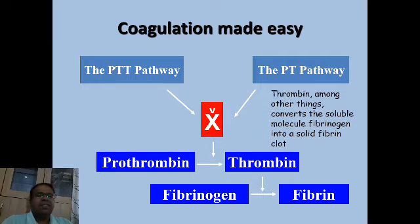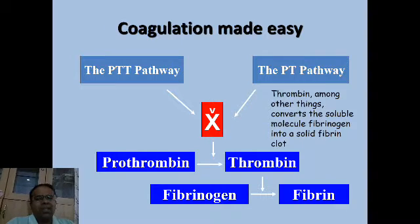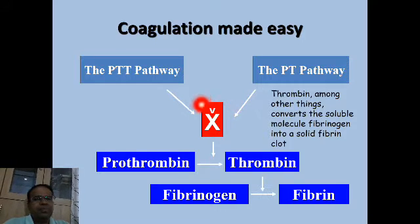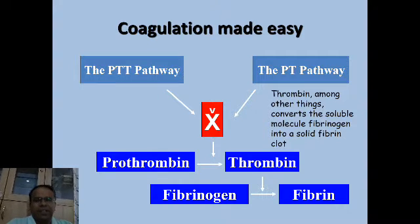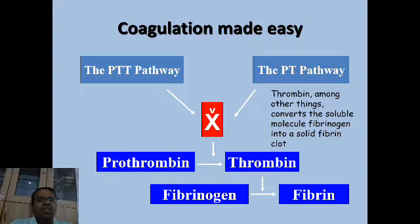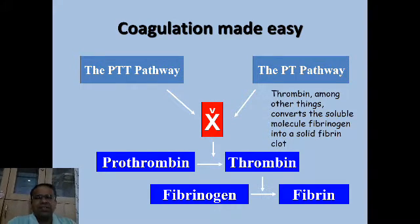Both pathways converge in a common pathway starting with factor X. X marks the spot — that's how we remember both pathways converge at X. Factor V fits in the top of X, so it is a cofactor for X. Activated factor 10 converts factor 2 (prothrombin) to thrombin, and thrombin converts fibrinogen into fibrin, so the soluble molecule of fibrinogen is converted into a solid fibrin clot. That's the coagulation cascade.